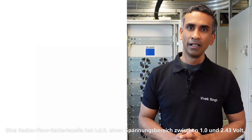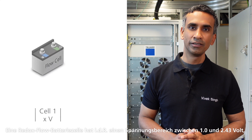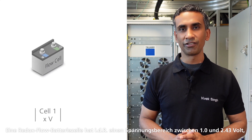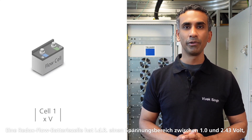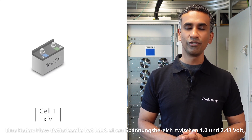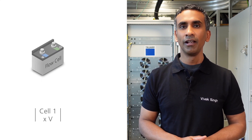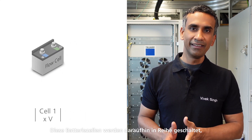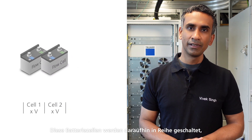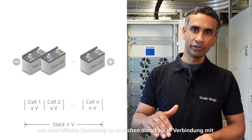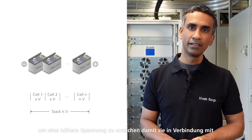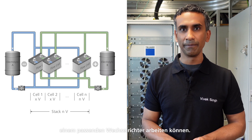The first concern that flow battery manufacturers have is what is the right optimum stack. A typical nominal cell voltage range of a flow battery can be anywhere between 1 to 2.43 volts, depending on the kind of flow battery used, and then these cells are stacked together to reach higher voltages so that they can operate in conjunction with a suitable inverter.